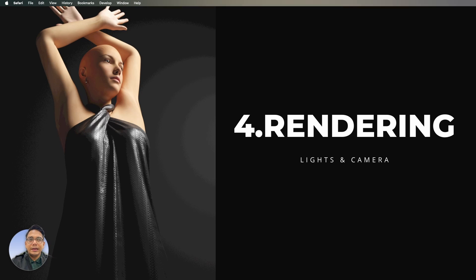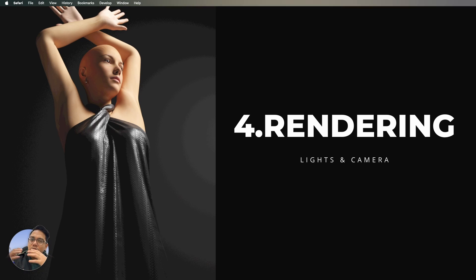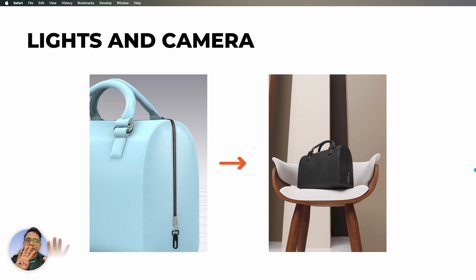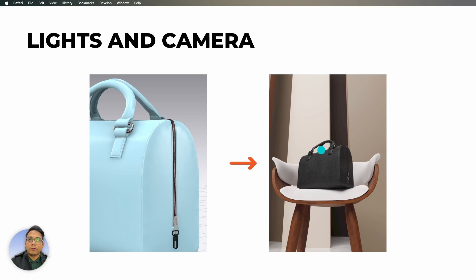We have now covered three topics: modeling, finishing, and texturing. Now it's time for rendering. Rendering is about setting up lights and cameras to bring together everything you've built — the modeling, finishing, and texturing. You set up lights, you set up a camera, and then you do a photo shoot. For example, we designed this bag and brought it into an environment, created a scene — it's like a product shoot. This is how realistic your designs will look once rendered.